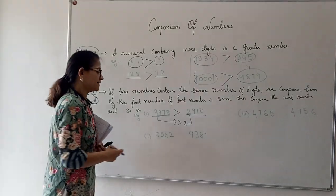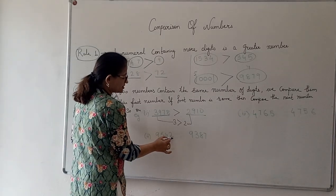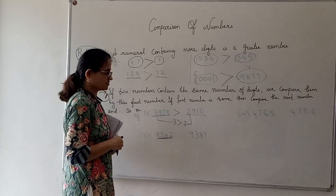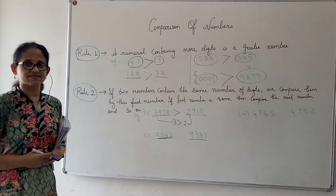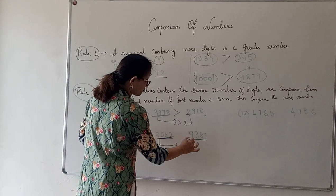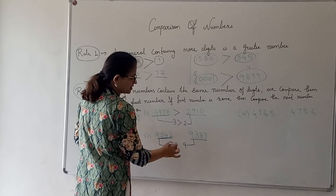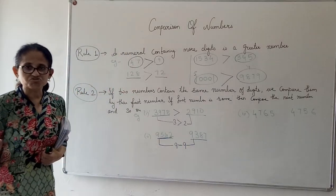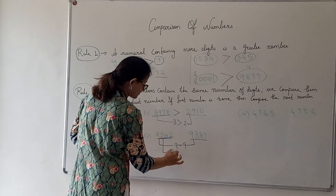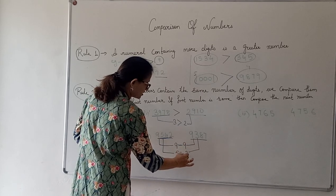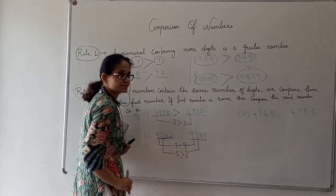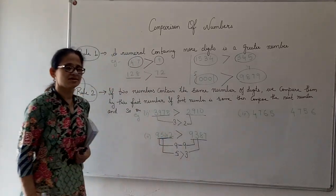In the next case: 9,542 and 9,387. Both have 4 digits. If we compare the first digit, it is 9 from both — they are the same. So how do we decide? We move to the next digit. From 9,542 we take 5, and from 9,387 we take 3. Now, which one is bigger? 5 is bigger than 3. So 9,542 is the bigger number.